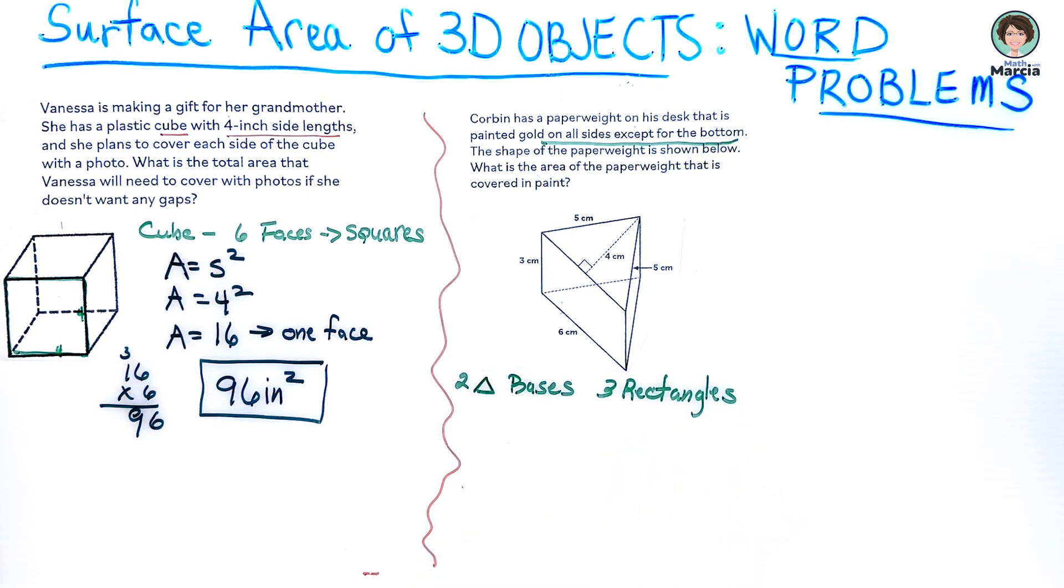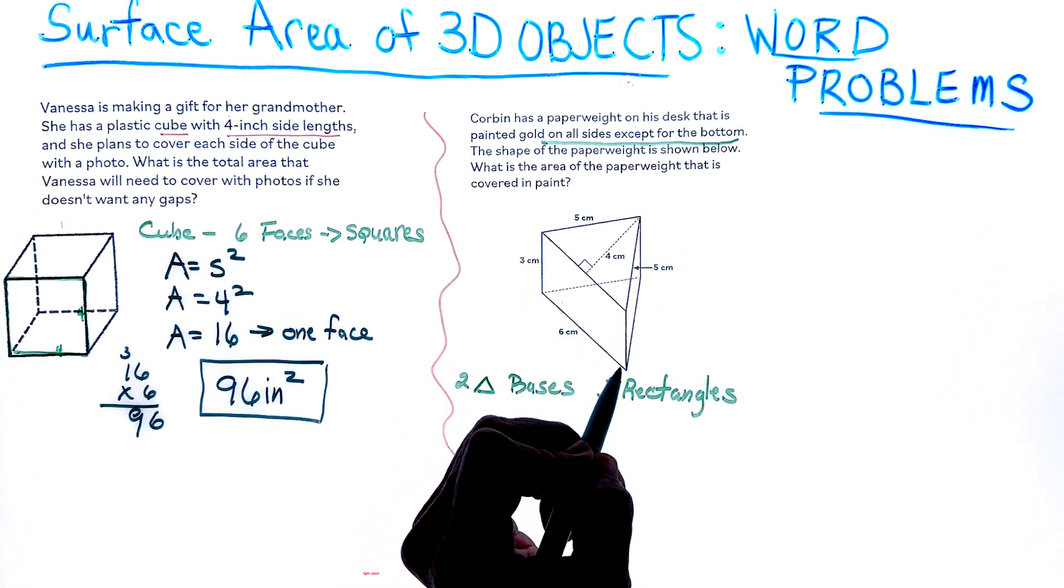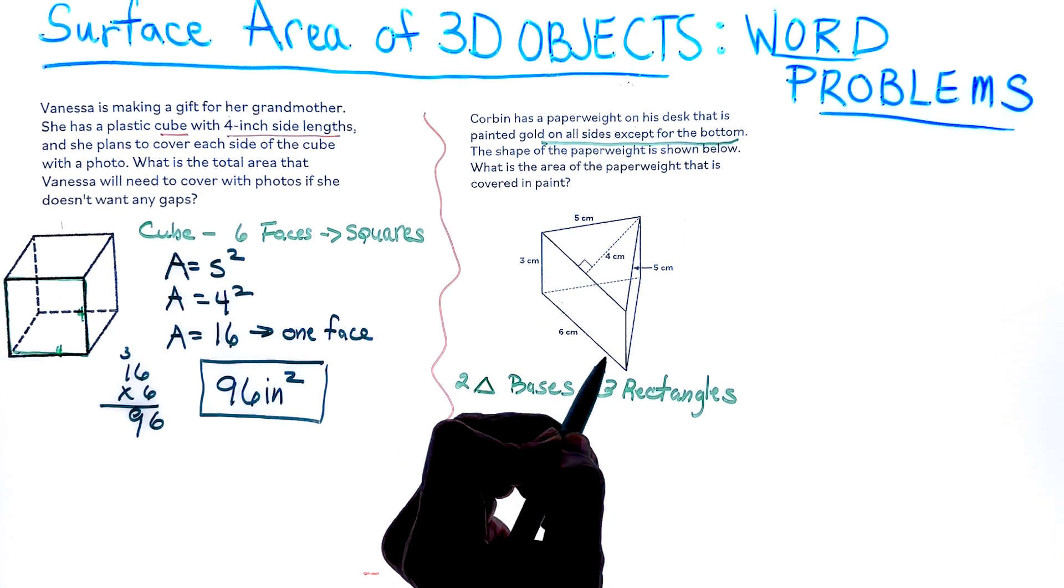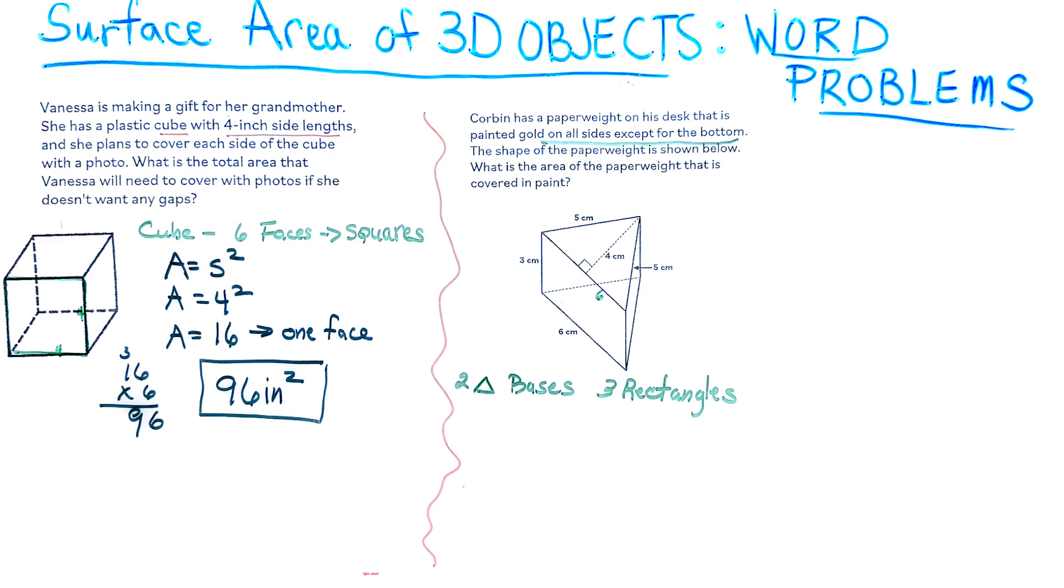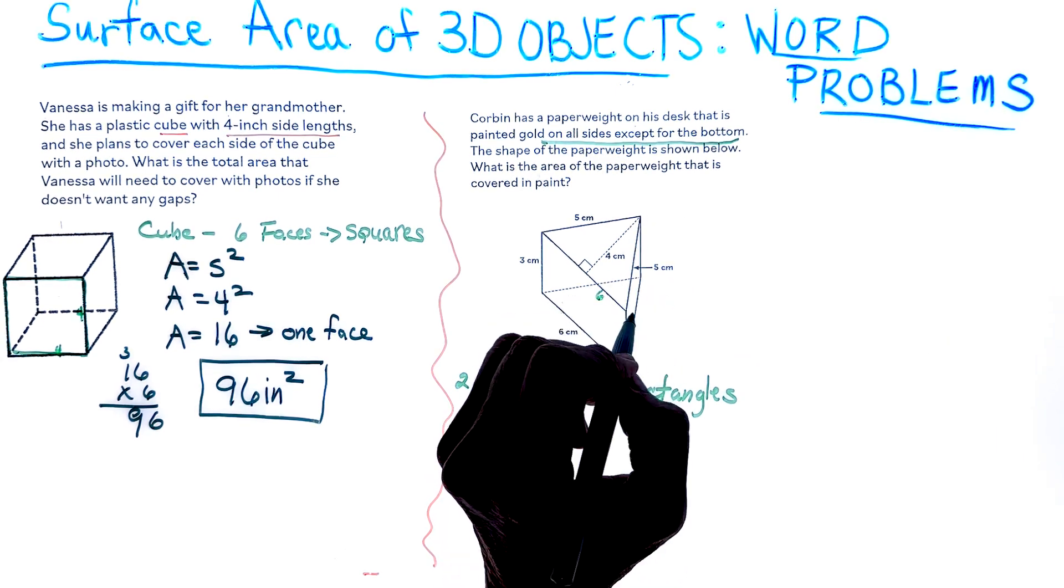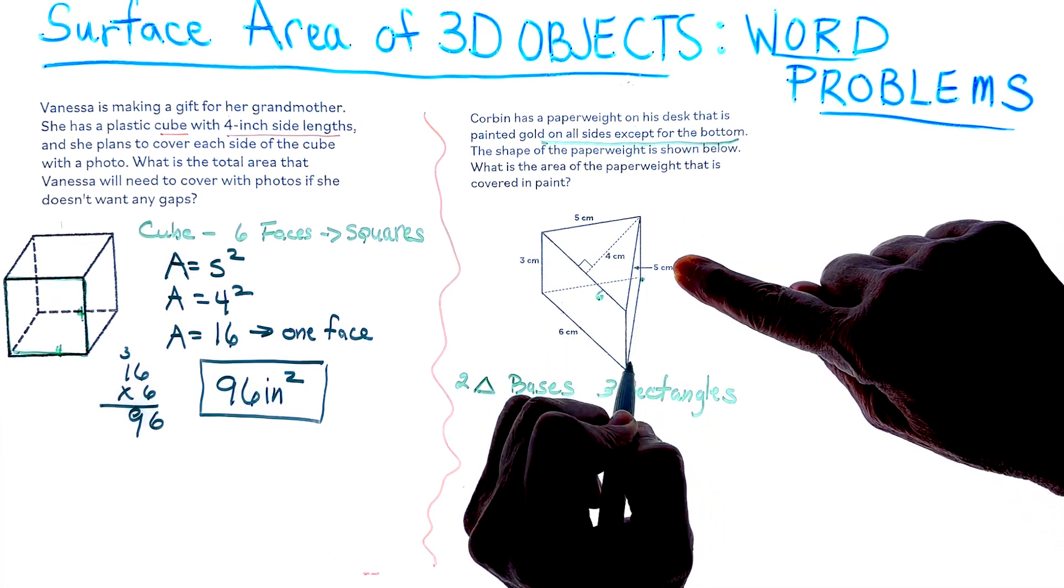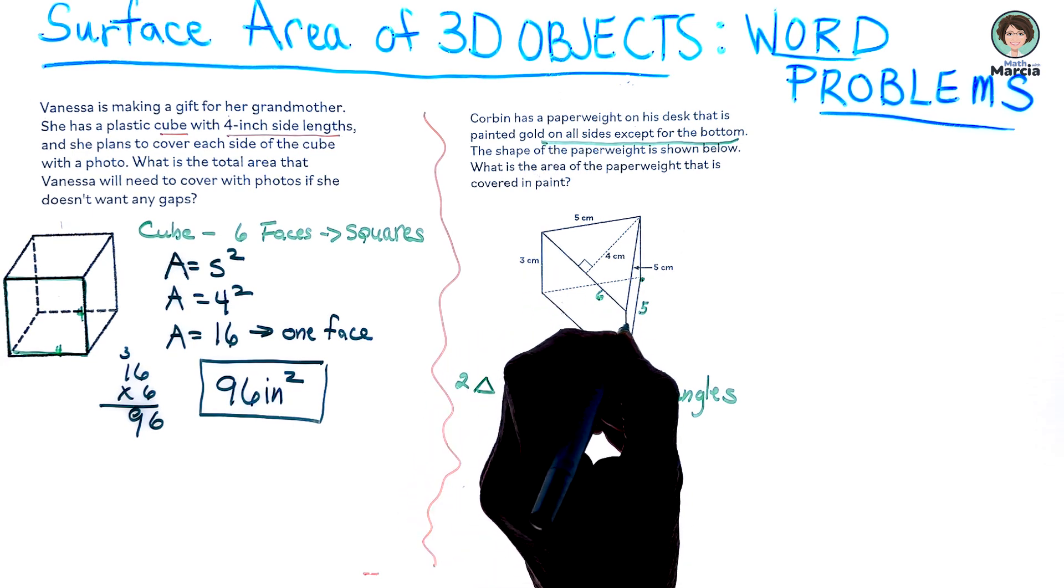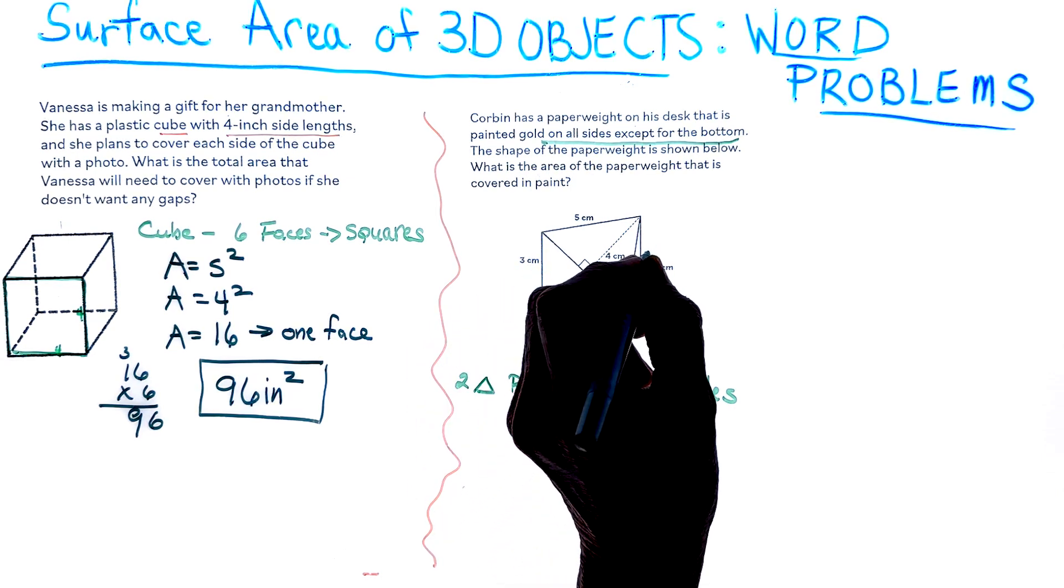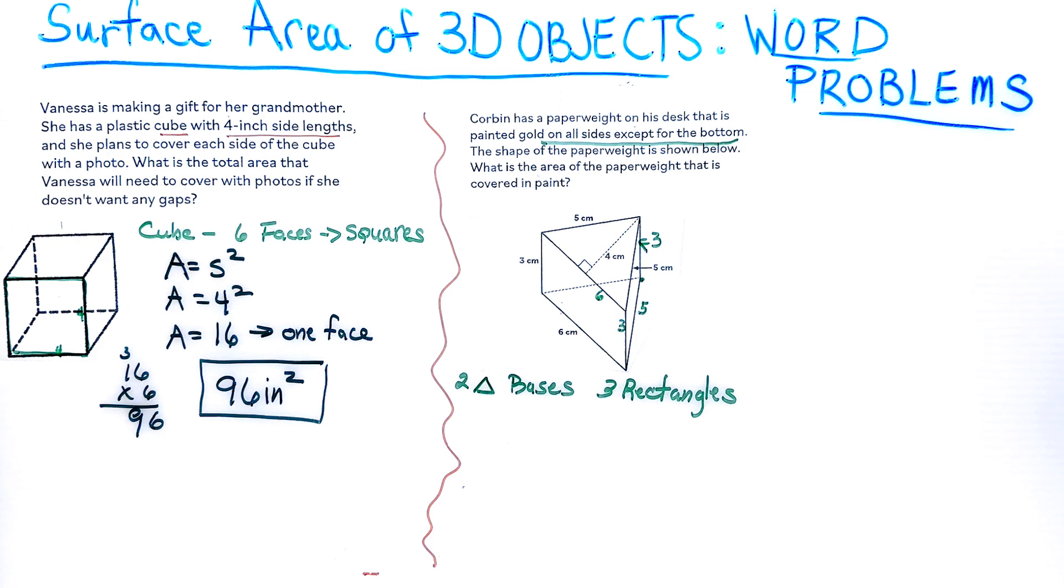We're going to need the triangle formula and the rectangle formula. I want to mark this picture. If this side is a 6, we know that the opposite side would also be a 6. If this side of this triangle is a 5, we know this bottom part is a 5 also. If it's 3 tall, we know this would be 3 as the height and even in the back here. That's going to help us with our formulas.